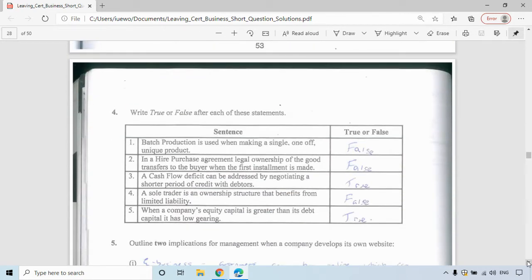Question four, there are true or false statements. Batch production is used when making single, one-off, unique products. That's incorrect. That would be job production. Batch production is when you make like bread, you make them in batches or a number of units at a time. Whereas job production is single, one-off, unique products. In a hire purchase agreement, legal ownership of a good transfers to the buyer when the first installment is made. That's incorrect. It's only when the last installment is paid does the person now own the product.